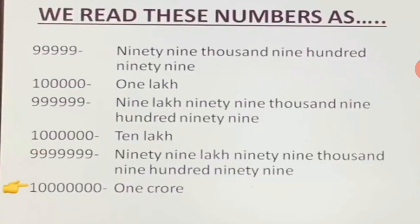Let's read these numbers in sequence: 99,999; then 1,00,000 — we read this as 1 lakh; then 9,99,999; then 10,00,000 — which is 10 lakh; then 99,99,999 — seven 9s; and finally 1,00,00,000 — we read this as 1 crore.